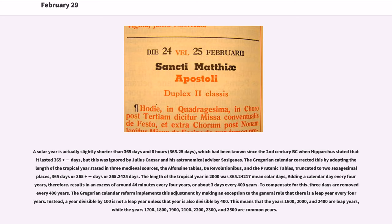The length of the tropical year in 2000 was 365.24217 mean solar days. Adding a calendar day every four years results in an excess of around 44 minutes every four years, or about three days every 400 years. To compensate, three days are removed every 400 years. The Gregorian calendar reform implements this by making a year divisible by 100 not a leap year unless that year is also divisible by 400.